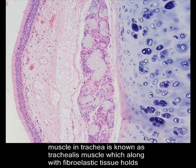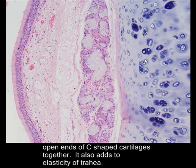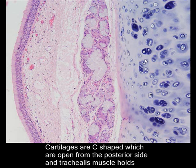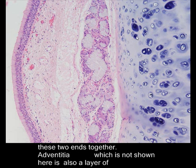The only smooth muscle in the trachea is known as the trachealis muscle, which along with fibroelastic tissue holds the open ends of the C-shaped cartilages together. It also adds to the elasticity of the trachea. The cartilages are C-shaped, open from the posterior side, and the trachealis muscle holds these two ends together.